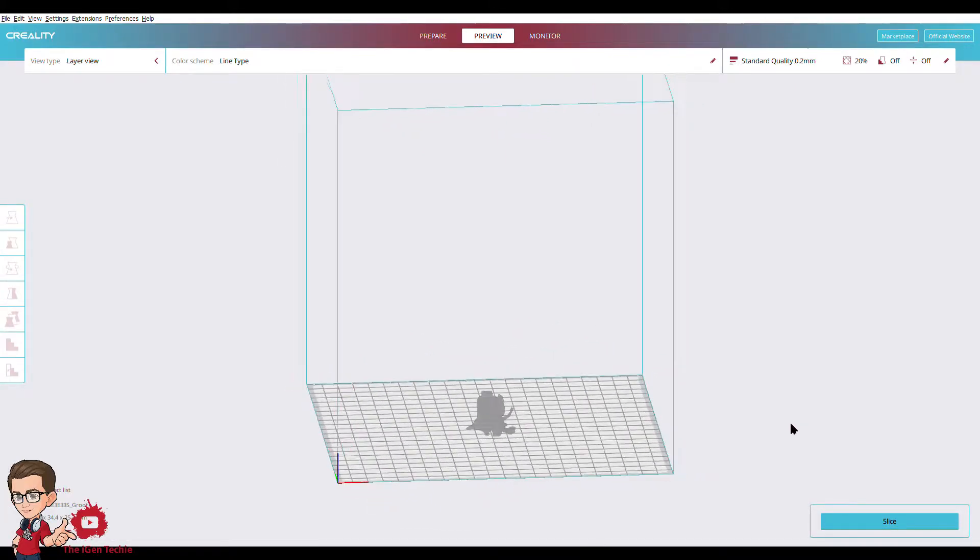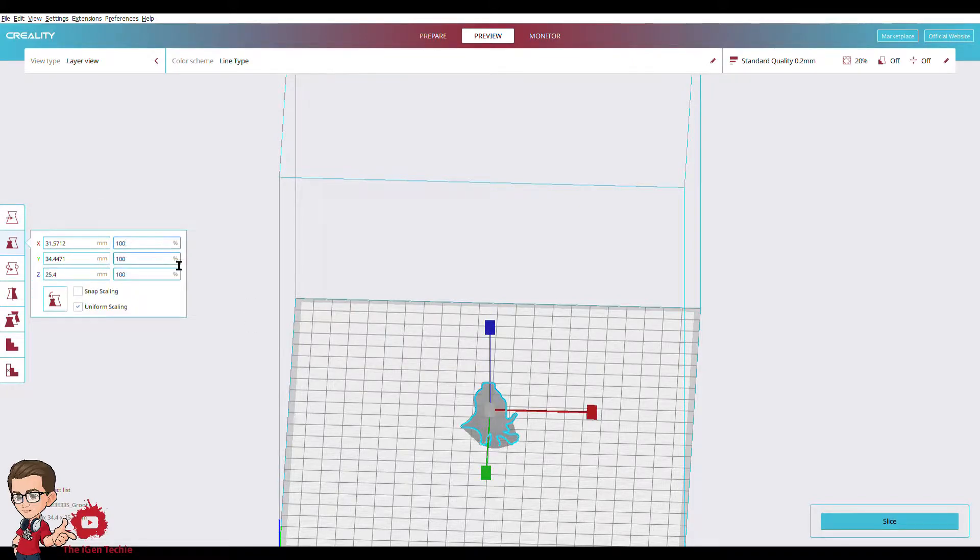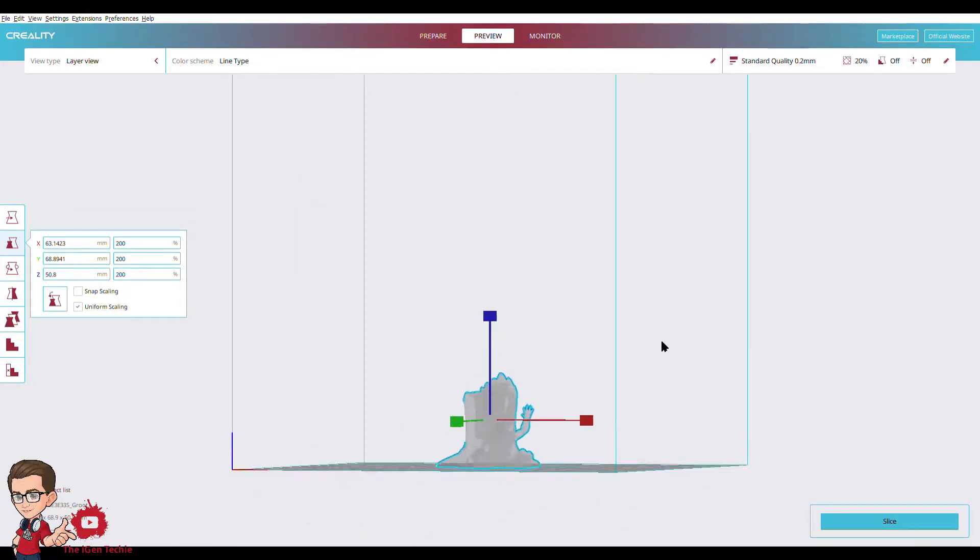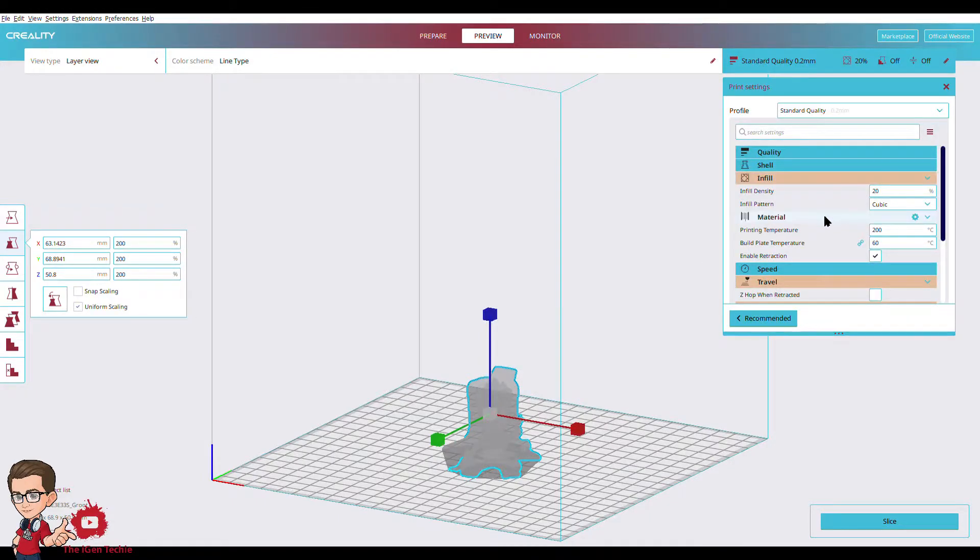And then change the size. I'll change it to about 200. And then what I must do is add the infill density. The infill I made it concrete since it's dirtier.